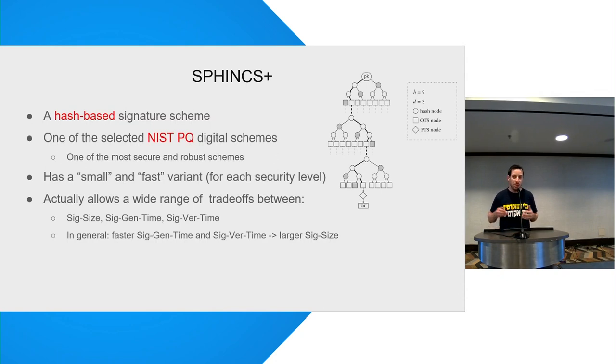And it actually, behind it, there is a very wide range of trade-offs that we can do between the signature size, the signature generation time, and the signature verification time. And the basic intuition is that if we want to have small signatures, we're going to pay with computational cost. If we want something that is very fast and efficient, we need it to be larger.